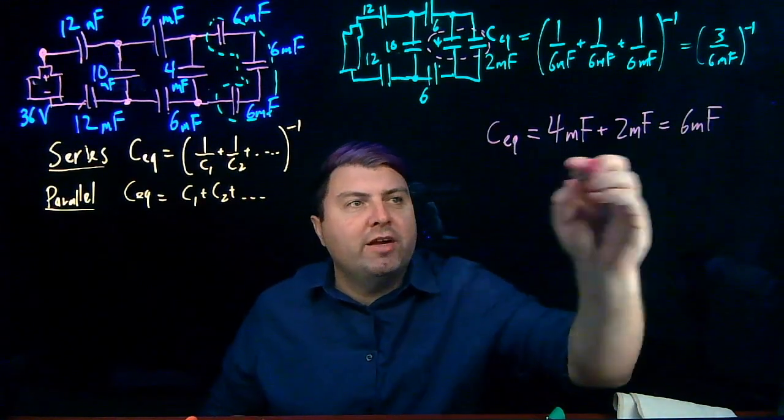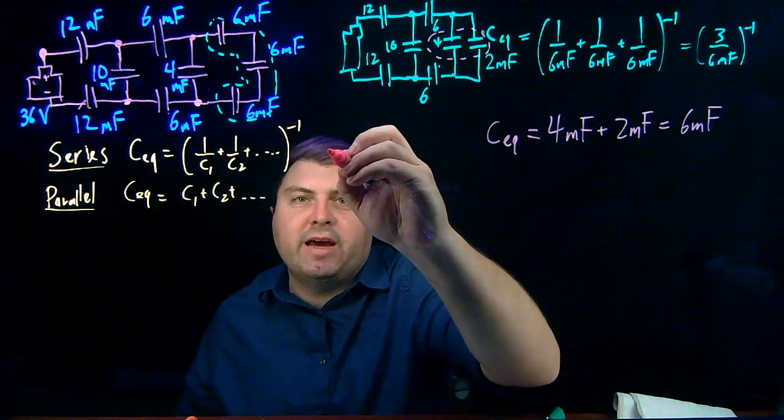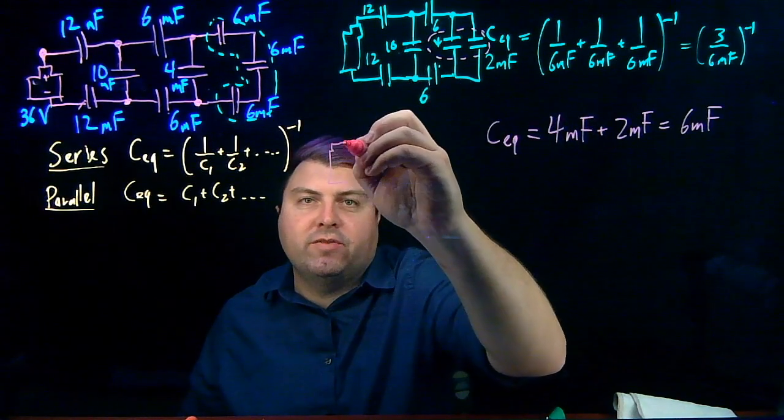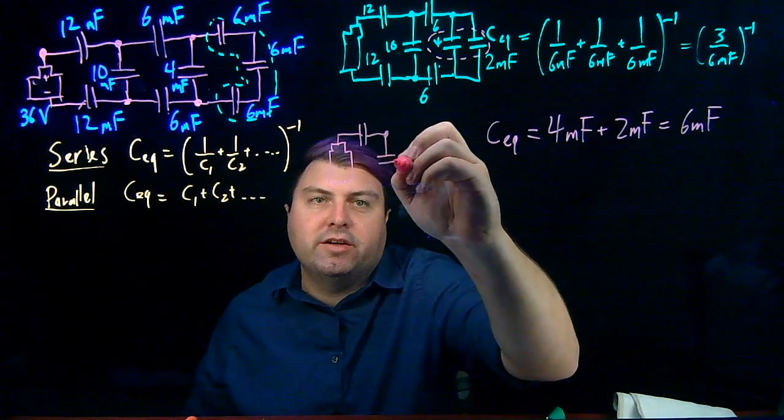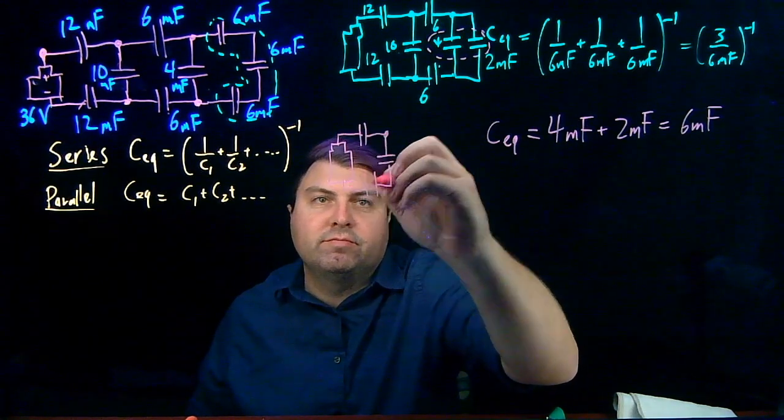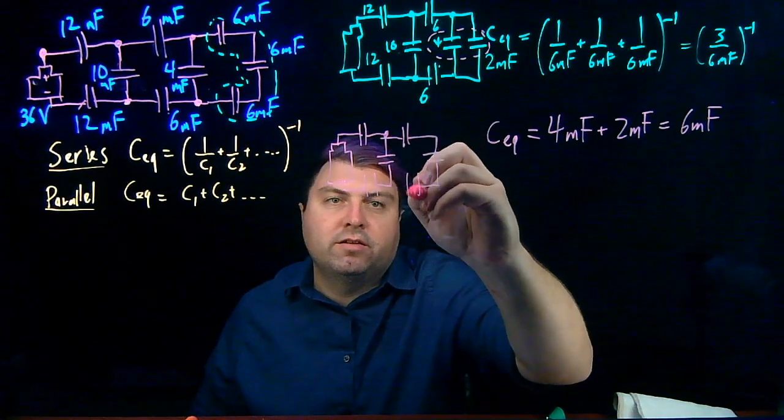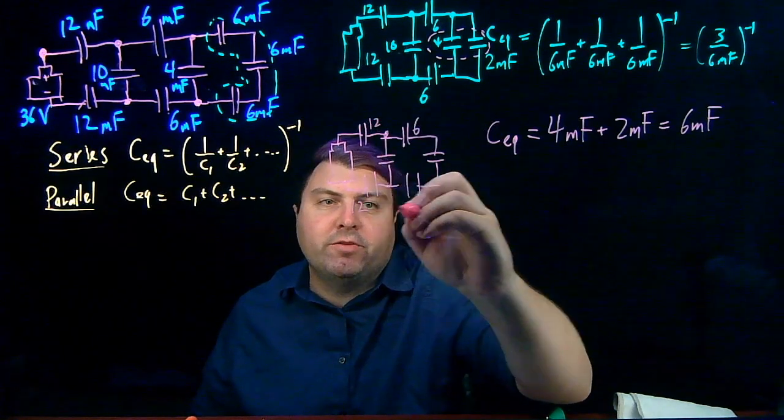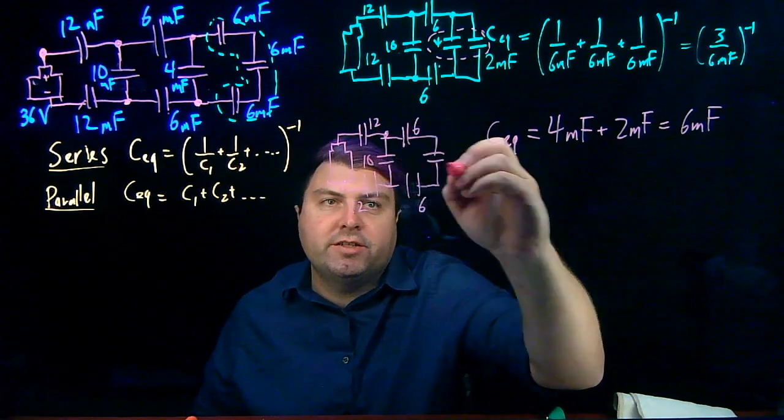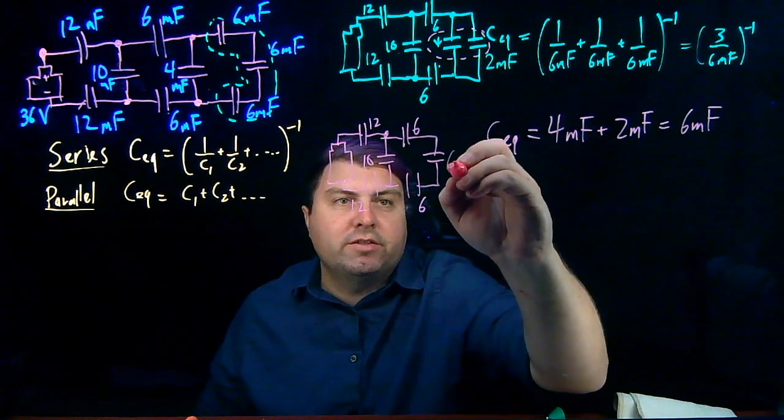We can choose to do the math first and then draw the circuit, or do the circuit first and then do the math. In this case, I've done the math first. When I redraw this circuit, it's going to get easier every single time. My 6 and 12 up here are unchanged, my 12 and 6 down here are unchanged, my 10 is unchanged. But now this, instead of being 2, is 6 millifarads.